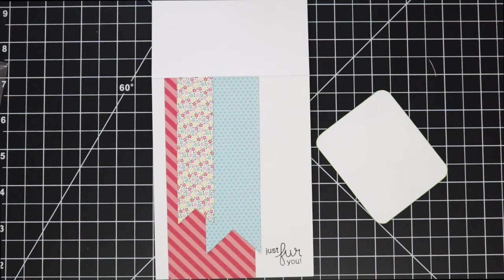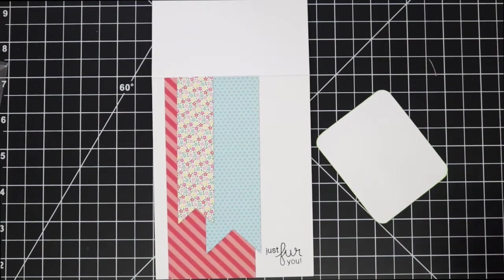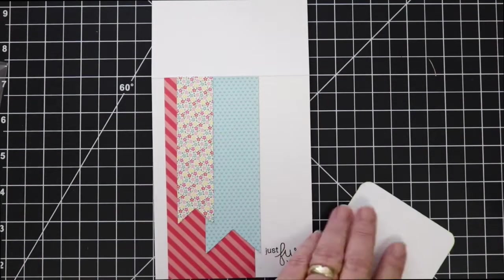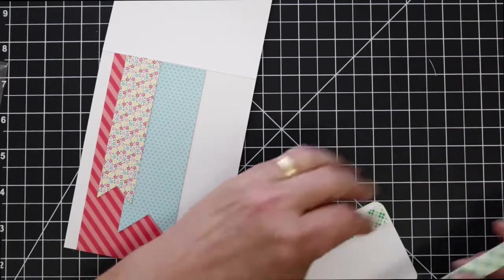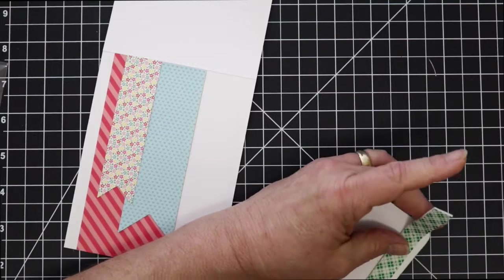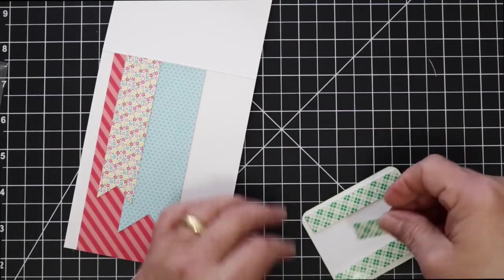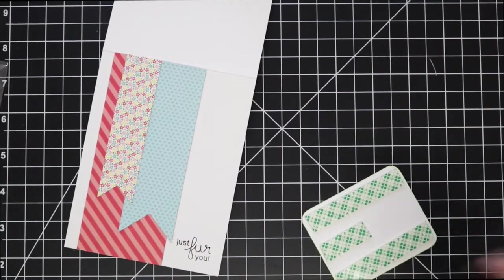I happen to like it so I did it and it just helped bring in a little bit of the green color that was in the grass underneath the mailbox as well as the green that is in the pattern paper with the little flowers.